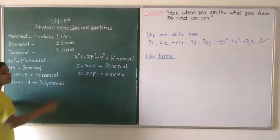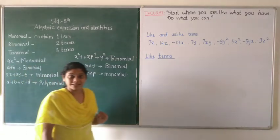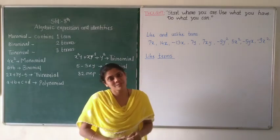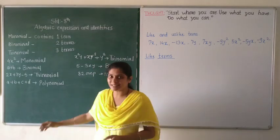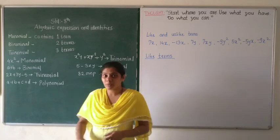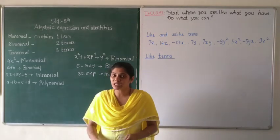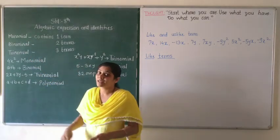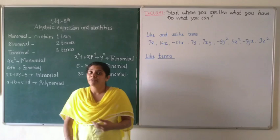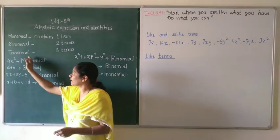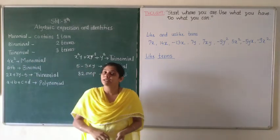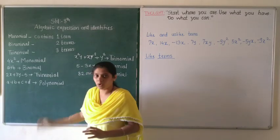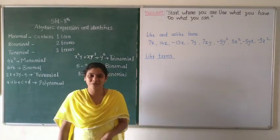With the help of the number of terms, you can classify an expression as monomial, binomial, trinomial and polynomial. If an expression contains only one term, it is known as monomial. If it contains two terms, it is binomial. If it contains three terms, it is trinomial. And if it contains many terms, it is a polynomial. Is it easy? Very good.